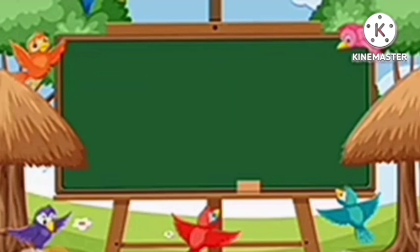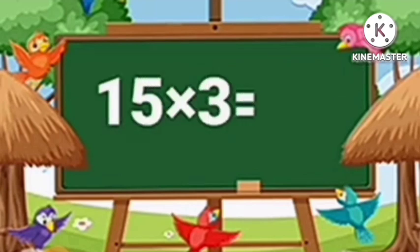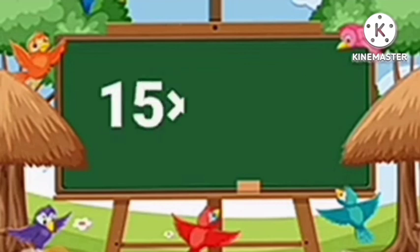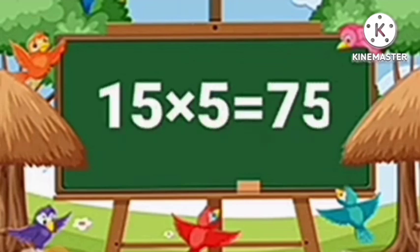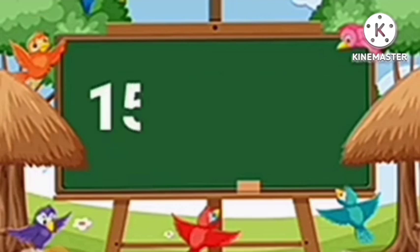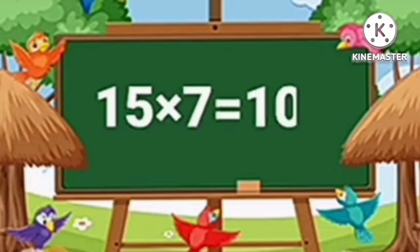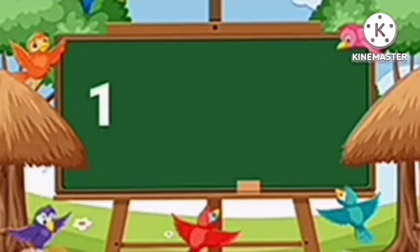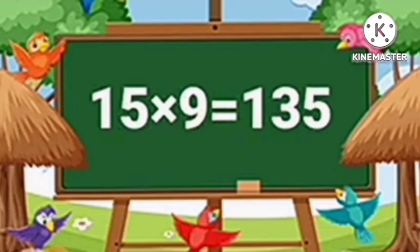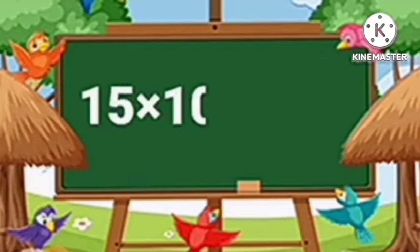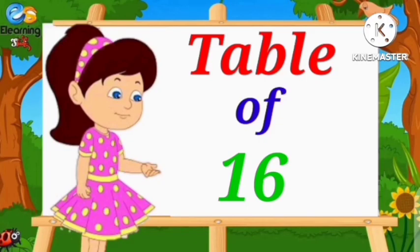Table of Fifteen. Fifteen ones are fifteen. Fifteen twos are thirty. Fifteen threes are forty-five. Fifteen fours are sixty. Fifteen fives are seventy-five. Fifteen sixes are ninety. Fifteen sevens are one hundred five. Fifteen eights are one hundred twenty. Fifteen nines are one hundred thirty-five. Fifteen tens are one hundred fifty.